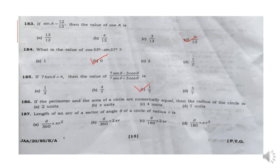Question 186: If the perimeter and the area of a circle are numerically equal, then the radius of the circle is Option A: 2 units.